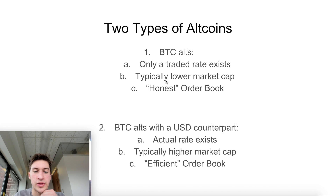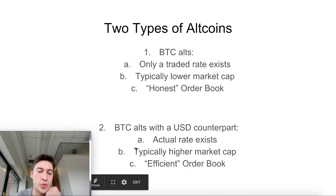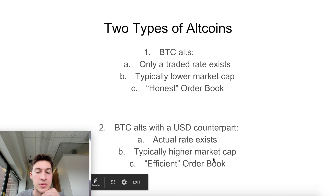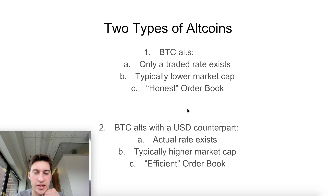Typically, we're going to have a lower market cap and lower liquidity for coins that are just traded to Bitcoin — that makes sense. If it's not traded to anything else, it's going to have less markets available to actually buy it. Bitcoin alts with a USD counterpart, like the majors such as XRP/BTC, typically have high market cap and higher liquidity. It's not too hard to trade these short term. They also have more of an efficient order book — I'd say a more honest order book, though I don't love the wording.